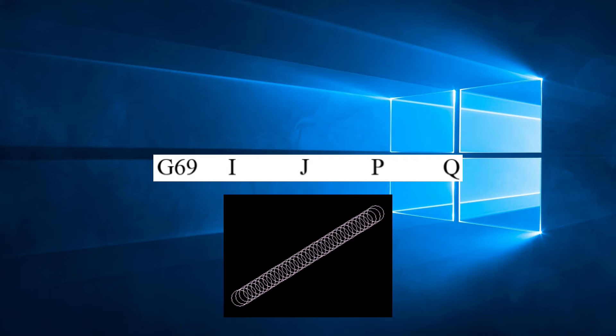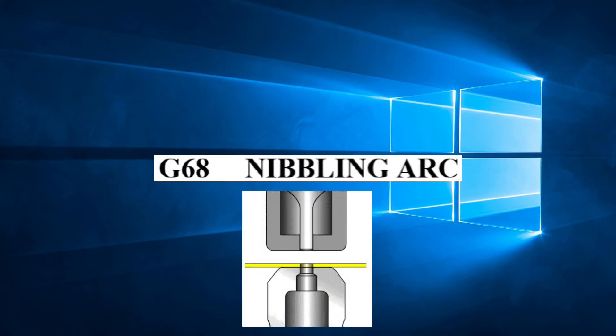As we explain in video number 13 covering G68 nibbling arc, there are two modes in which the machine can deliver hits onto a sheet of material: punching mode and nibbling mode. If you haven't viewed that video, please click on the link.